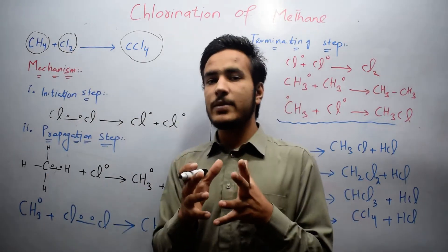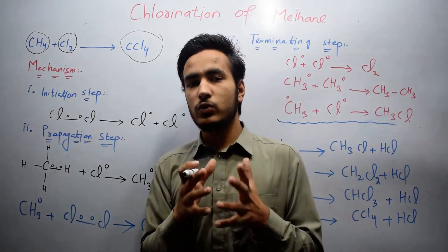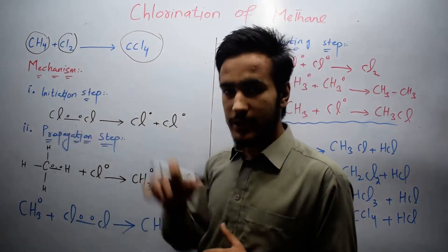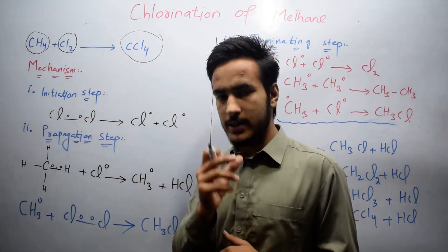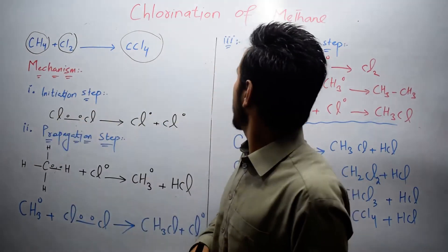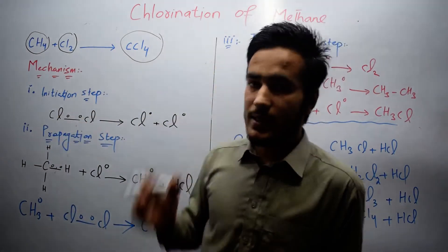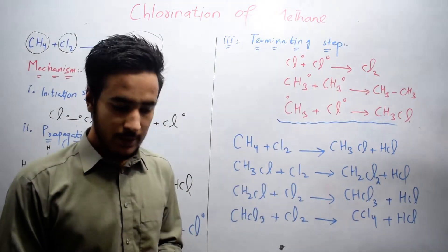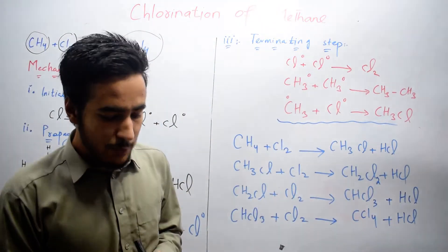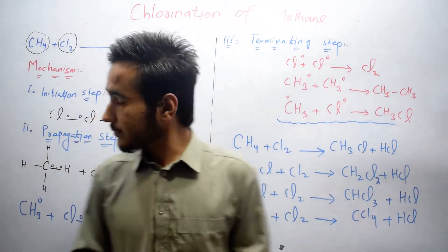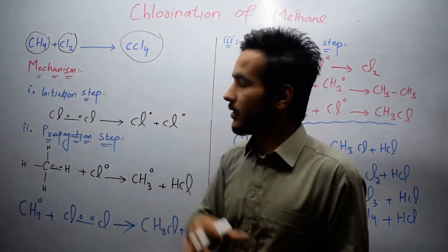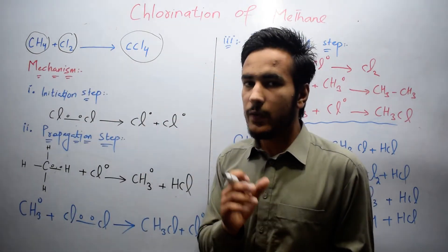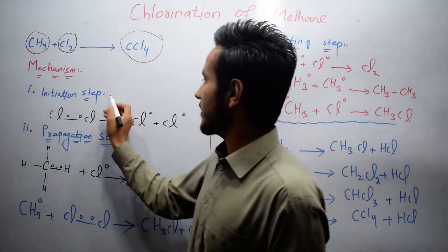The mechanism is divided into three parts: the first one is the initiation step, the second one is the propagation step, and the third one is the termination step. In the first step — the initiation step — we have a chlorine molecule, which is Cl2.